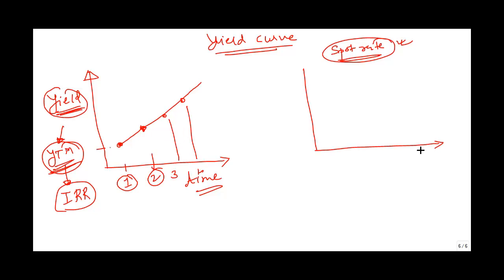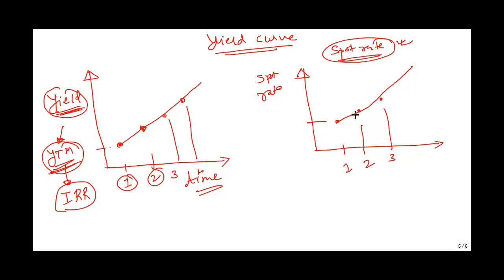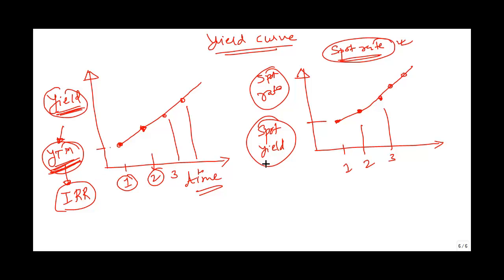A spot rate would be similar. What is the spot rate you will get if you invest for one year? What is the spot rate for investing for two years? What is the spot rate if you invest for three years? Note that this spot rate we have taken as an increasing rate — this is the yield curve. The yield curve can be a spot yield curve, a YTM yield curve, or a forward curve. But most of the time, we will focus on either the YTM or the spot.